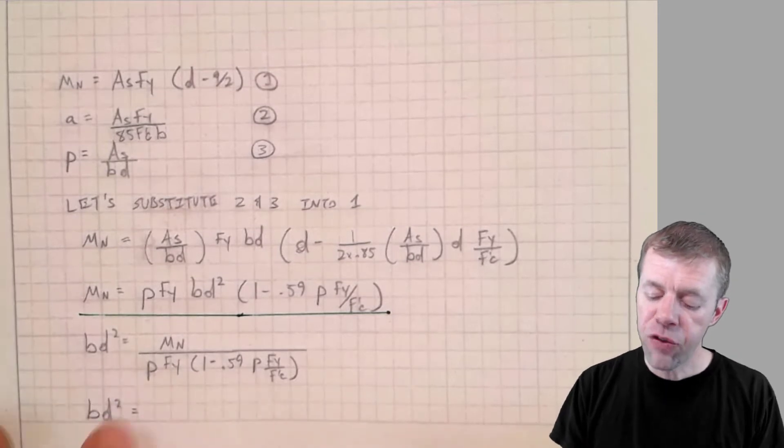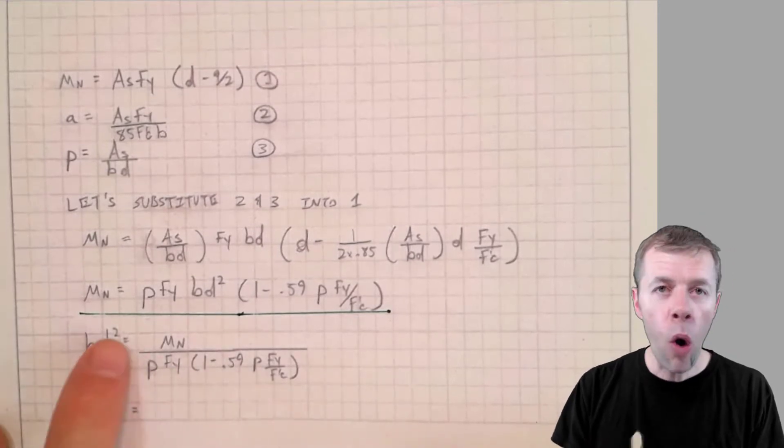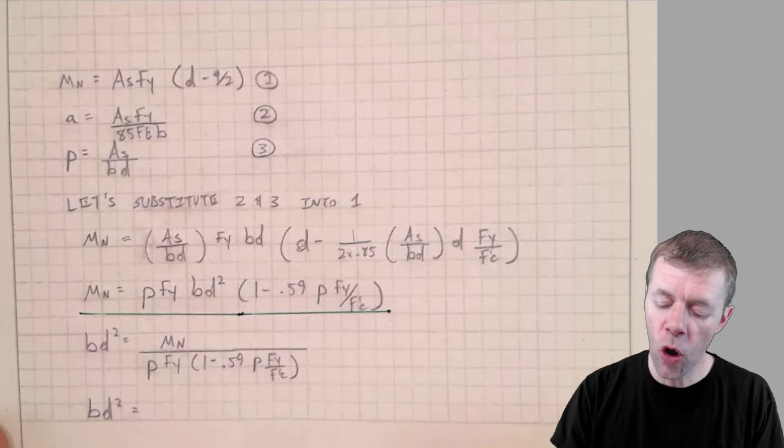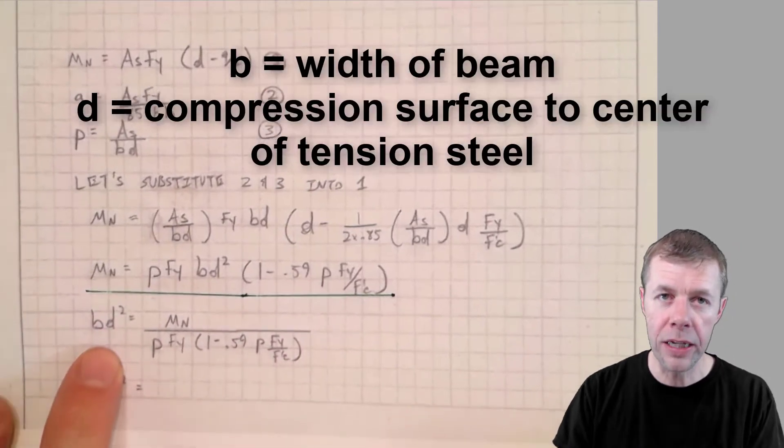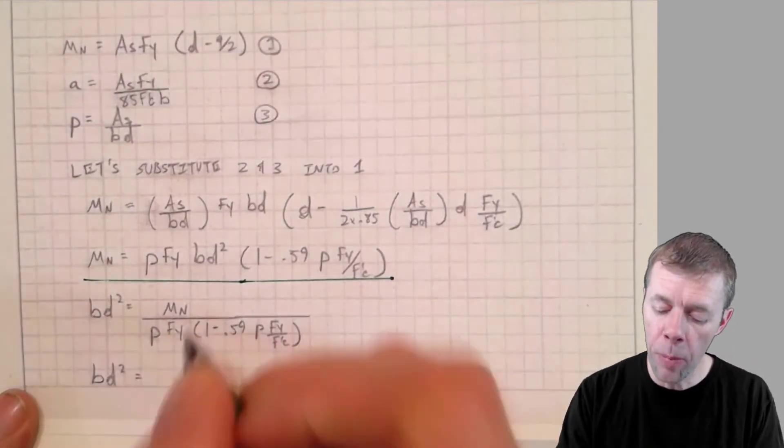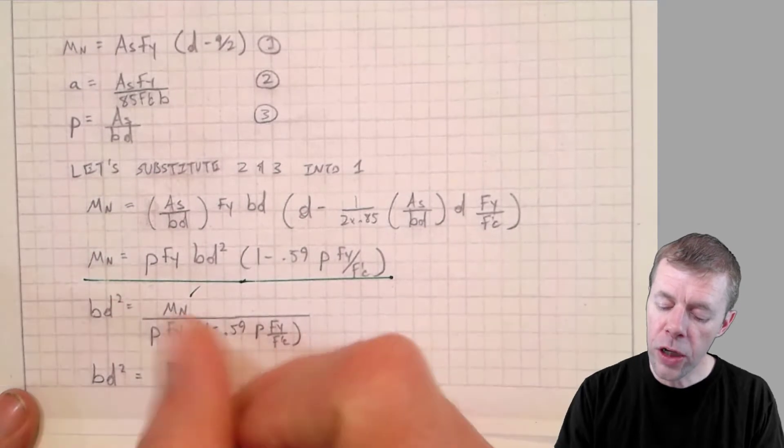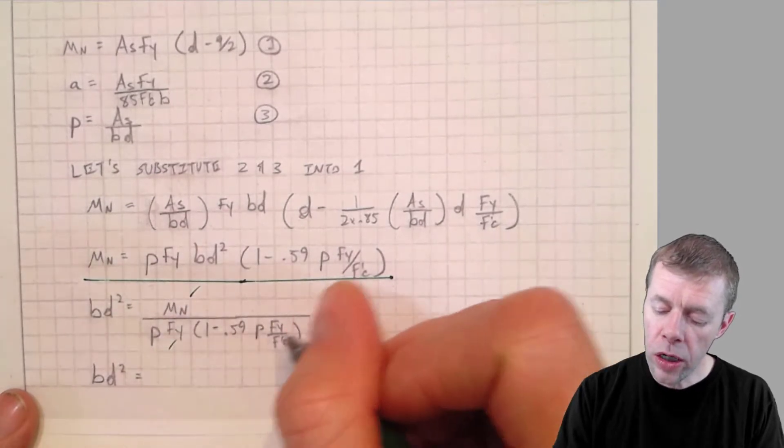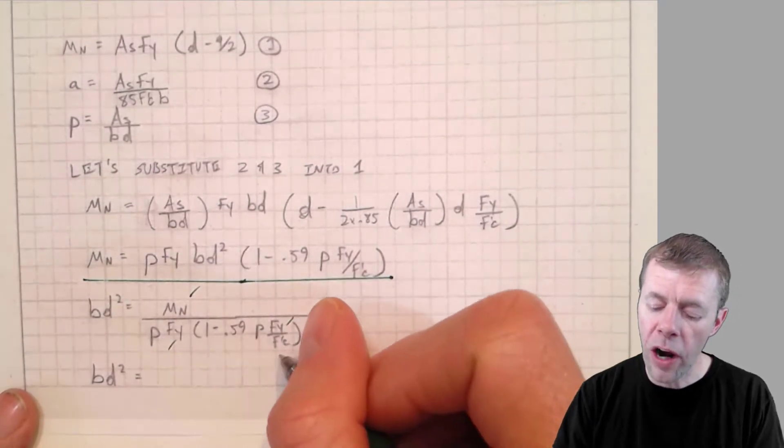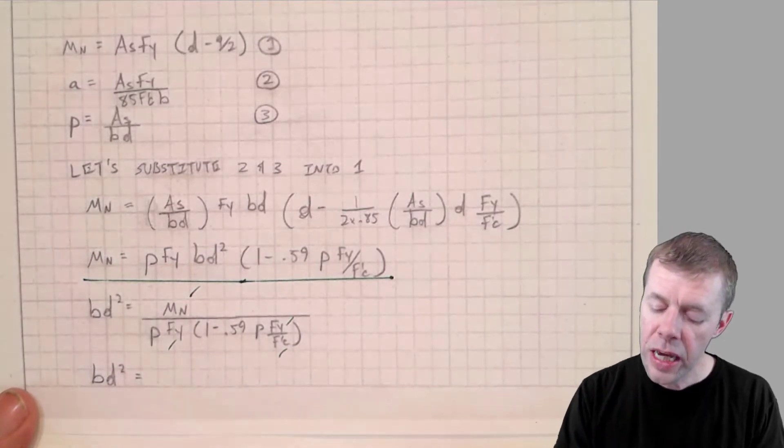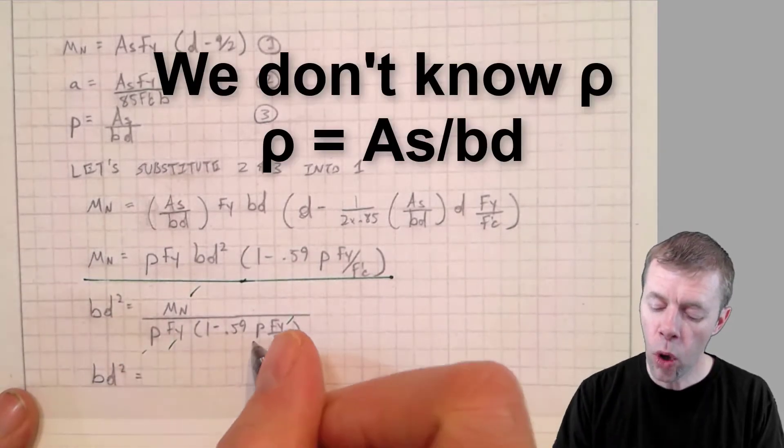And we're going to simplify it. If we look at this equation, we know almost everything in it. We're going to solve for BD squared on one side. We know our moment, we know our yield strength, we know our F prime C. The only thing we don't know in this equation is our rho.